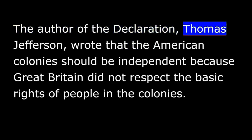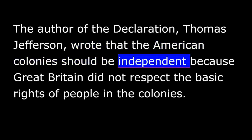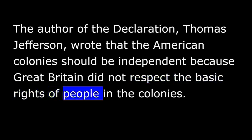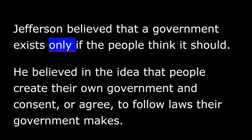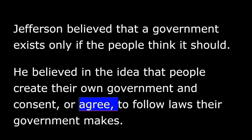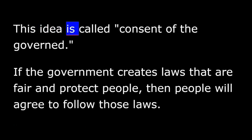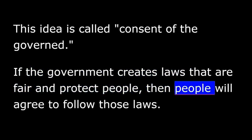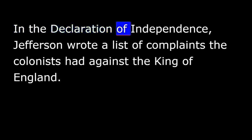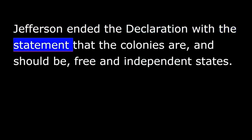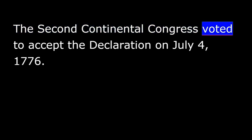The author of the Declaration, Thomas Jefferson, wrote that the American colonies should be independent because Great Britain did not respect the basic rights of people in the colonies. Jefferson believed that a government exists only if the people think it should. He believed in the idea that people create their own government and consent or agree to follow laws their government makes. This idea is called Consent of the Governed. Jefferson wrote a list of complaints the colonists had against the King of England, and ended the Declaration with the statement that the colonies are and should be free and independent states. The Second Continental Congress voted to accept the Declaration on July 4, 1776.